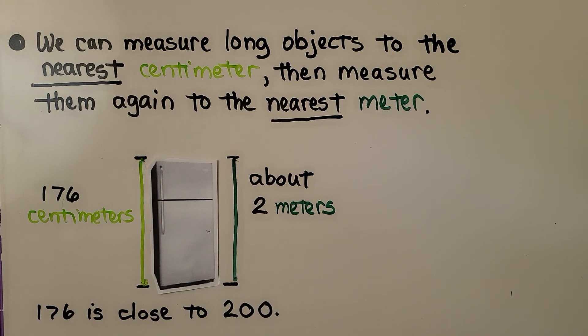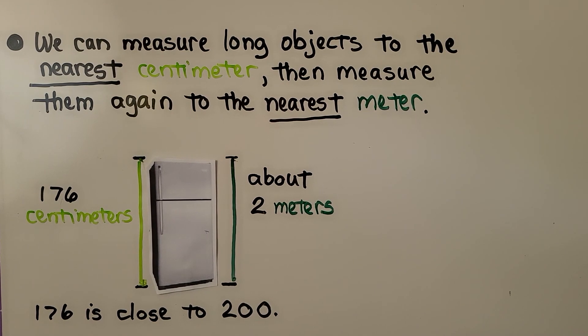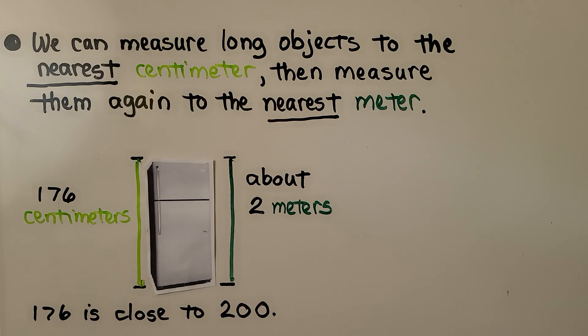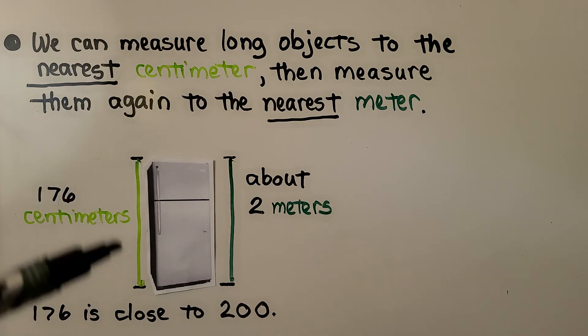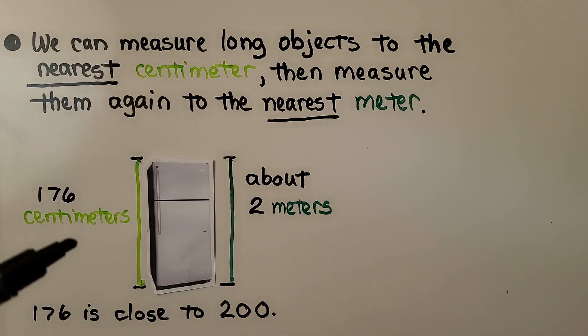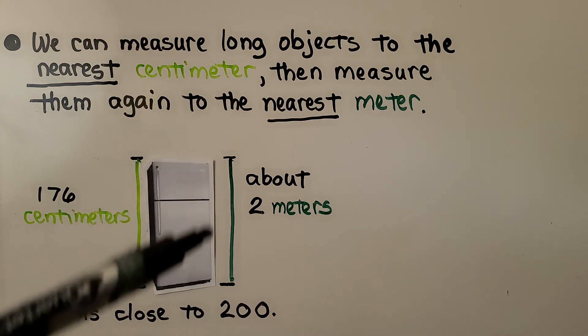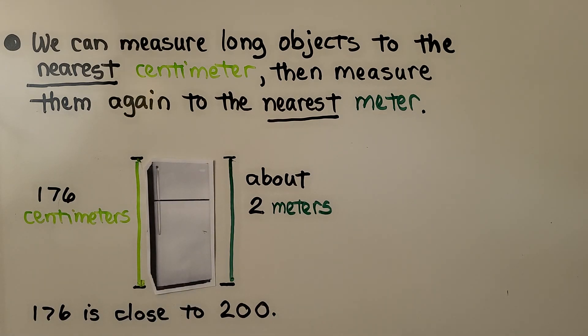We can measure long objects to the nearest centimeter, then measure them again to the nearest meter. We measure a regular refrigerator. My refrigerator was 176 centimeters and that's about two meters because 176 is close to 200.